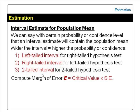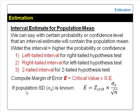To estimate the confidence interval, we first have to compute the margin of error, denoted by E. The formula is: E = critical value × standard error. If the population standard deviation is known, we will use Z-critical as the critical value and use the population standard deviation to compute the standard error. Z-critical depends on the level of confidence and the type of test, whether it is one-tailed or two-tailed.